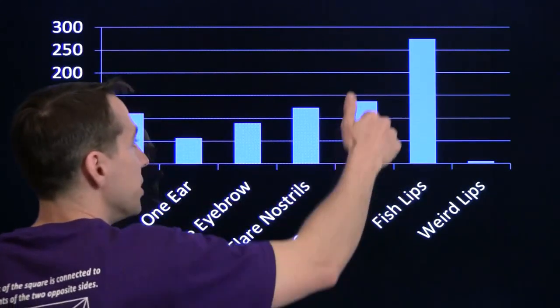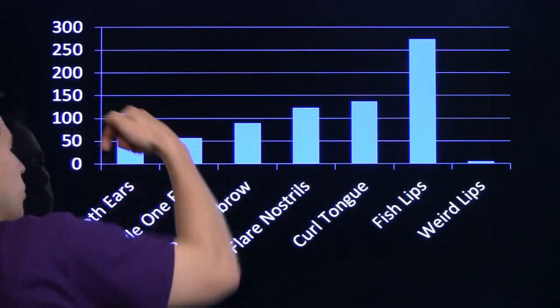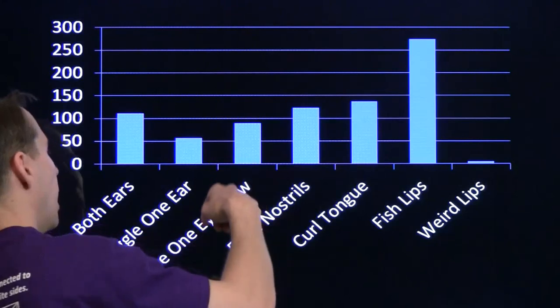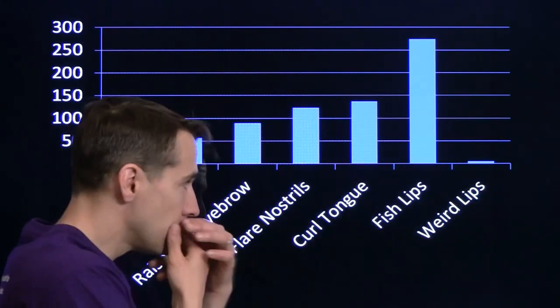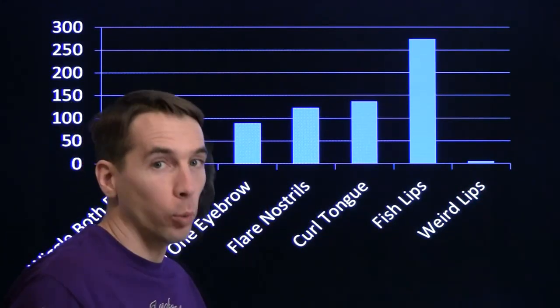We can put them in order just at a glance. Tallest bar, fish lips. Next is curled tongue. Next is flare nostrils. Next is wiggle both ears. Then raise one eyebrow, then wiggle one ear. And then last, the hardest, weird lips.